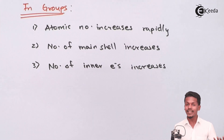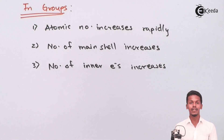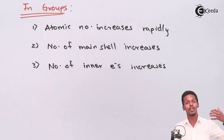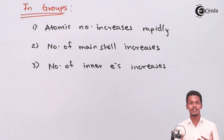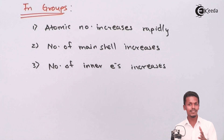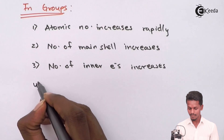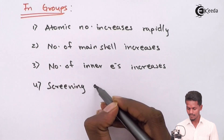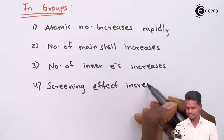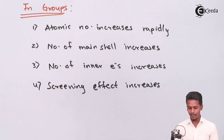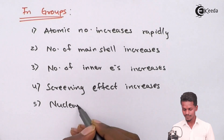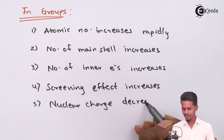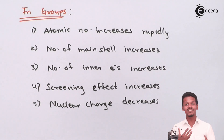Because the inner electrons go on increasing as we move down the group, these inner electrons will try to shield the nucleus so that it does not have as much influence on the outermost electron. This is basically shielding effect, and it is mainly observed when we move from top to bottom in a group. The increasing inner electrons result in increasing screening effect, which makes the nuclear charge decrease, and hence the atomic size increases.